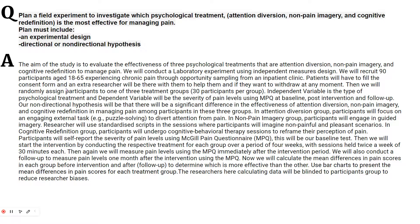An extra researcher will be there to assist them, and if they want to withdraw at any moment — this is to make your study more valid and ethical. Then we will randomly assign participants to one of the three treatment groups, 30 participants per group.